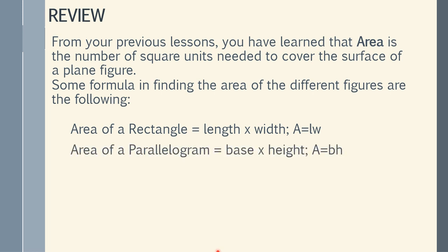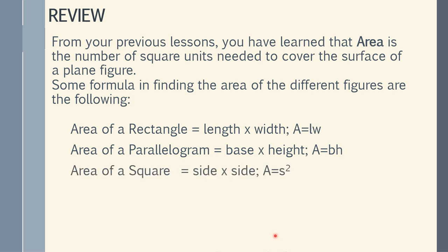Next is the area of a parallelogram, that is base times height, or A equals base times height. Remember, if you put the letters together, it means multiplication. Then we have the area of a square, that is side times side. In symbol, that is A equals s squared.